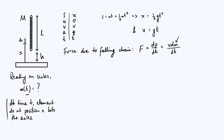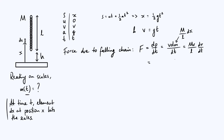Assuming the chain has uniform density, mass is proportional to length. The mass per unit length is M/L, so the mass element is dm = (M/L)dx. Putting it all together: F = v · (M/L)(dx/dt) = M·v²/L, since dx/dt = v. Since v = gt, we can write this force as a function of time: F = Mg²t²/L.